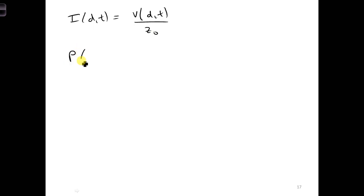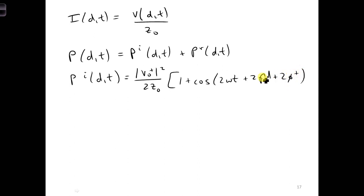We can say the instantaneous power is equal to incident power plus the reflected power. And once we do this and we simplify, we get V naught plus squared over 2 Z naught times 1 plus cosine of 2 omega T plus 2 beta D plus 2 phi plus. That is the incident instantaneous power. And the reflected instantaneous power is the same form, but just multiplied by the reflection coefficient.